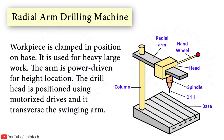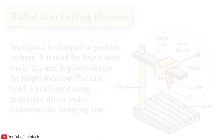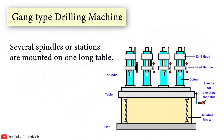In the Gang type drilling machine, several spindles or stations are mounted on one long table. In the Multi-spindle drilling machine, there are many spindles mounted on one head to allow many holes to be drilled simultaneously. The Numerical Control drilling machine can automatically change tooling with a turret or automatic tool changer, and speed, feed, and table position are controlled using a computer program.